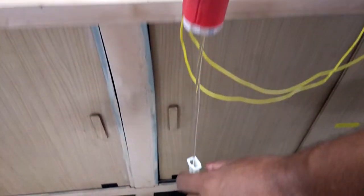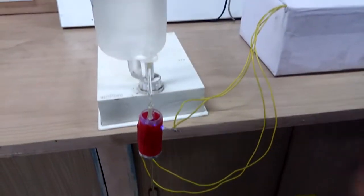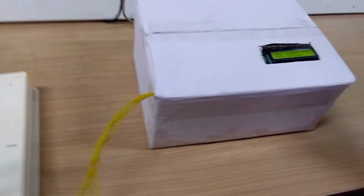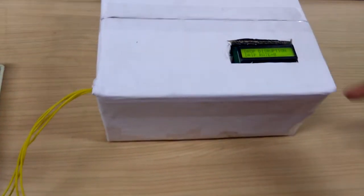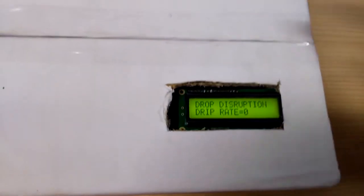This is the manual clamp that is used to control the flow rate of the saline. These are all connected to this box. Inside this box houses the LCD, the Arduino, the power supply and the required circuitry for the functioning of this entire device.